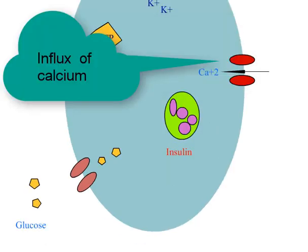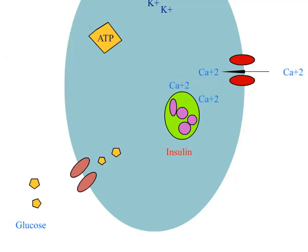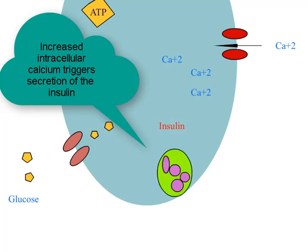Opening of voltage-gated calcium channels causes influx of calcium into the cell. Increased intracellular calcium triggers secretion of insulin.